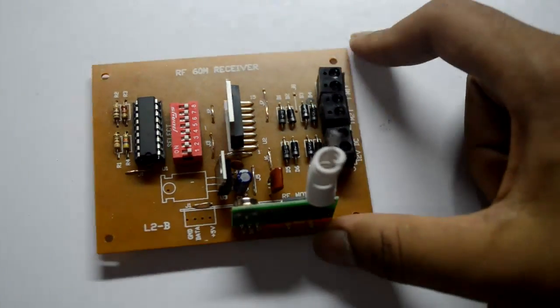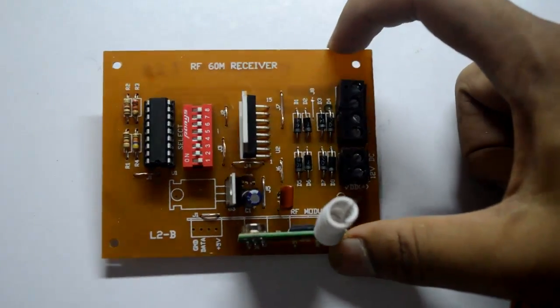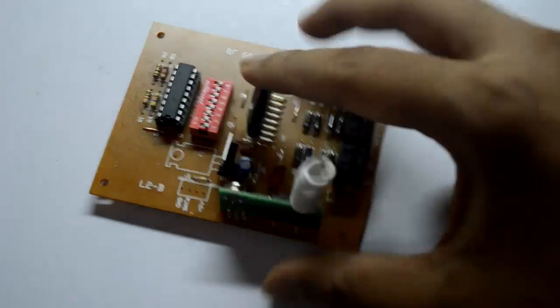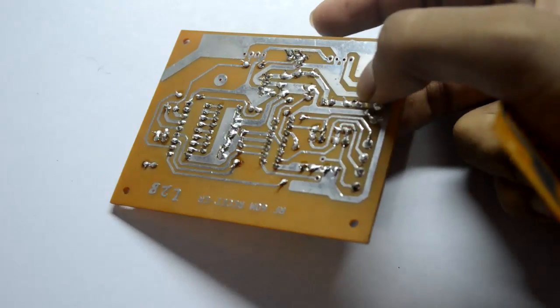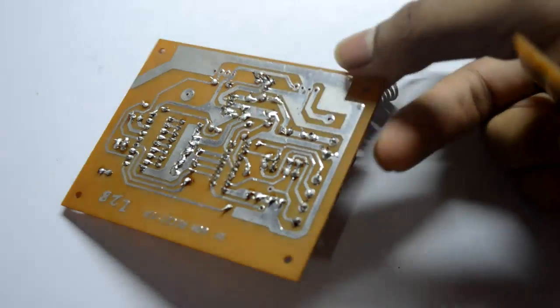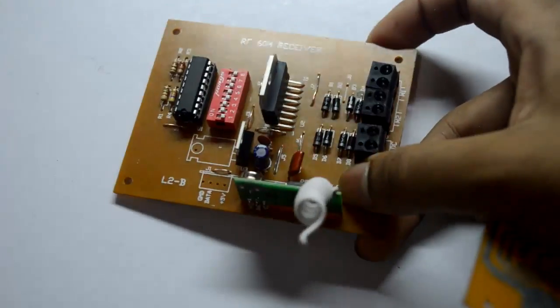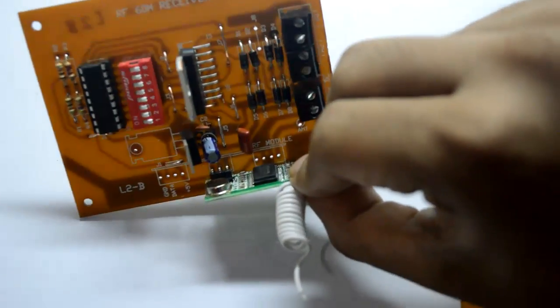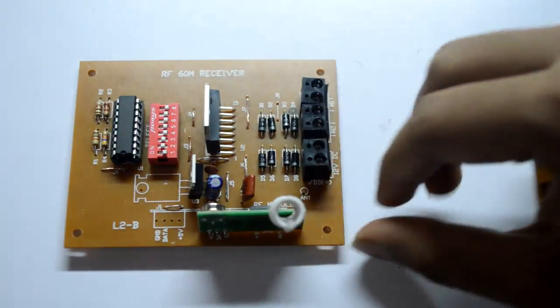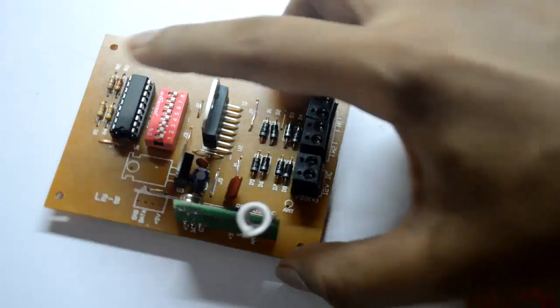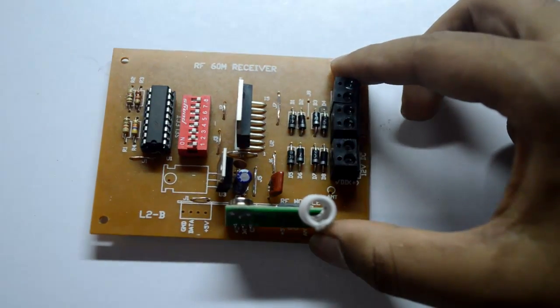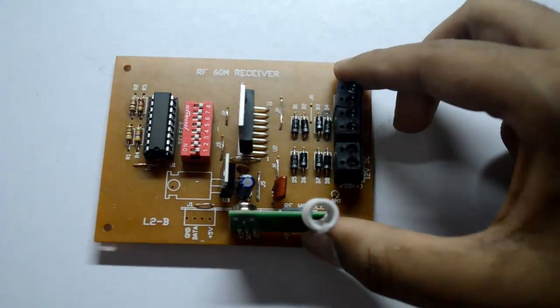Here we go, we have successfully completed with the soldering of the receiver. It hardly took me half an hour. Make sure all these spots are shiny. If they're not it might be a dry solder so you may need to re-solder them. Make sure your RF module is soldered in the correct position and these ICs are not shaking. Here we go, we have completed with the receiver. Now repeat the same procedure on the transmitter.